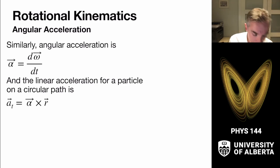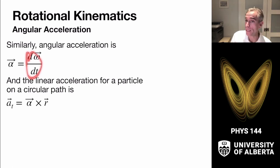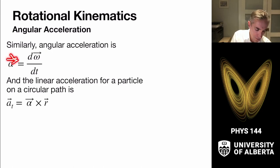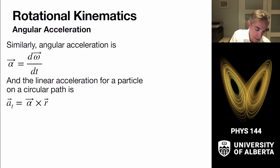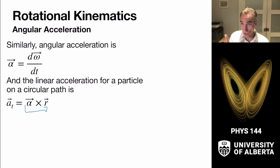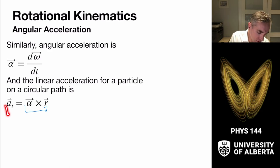We can define the angular acceleration as d omega dt. Just like dv by dt is the linear acceleration, the angular alpha — lowercase Greek letter alpha — is the angular acceleration, and it also comes with a vector. We can use alpha cross with the radius vector to figure out what the tangential component of the acceleration is. There'll be a centripetal normal component, but the tangential component is just alpha crossed with r.